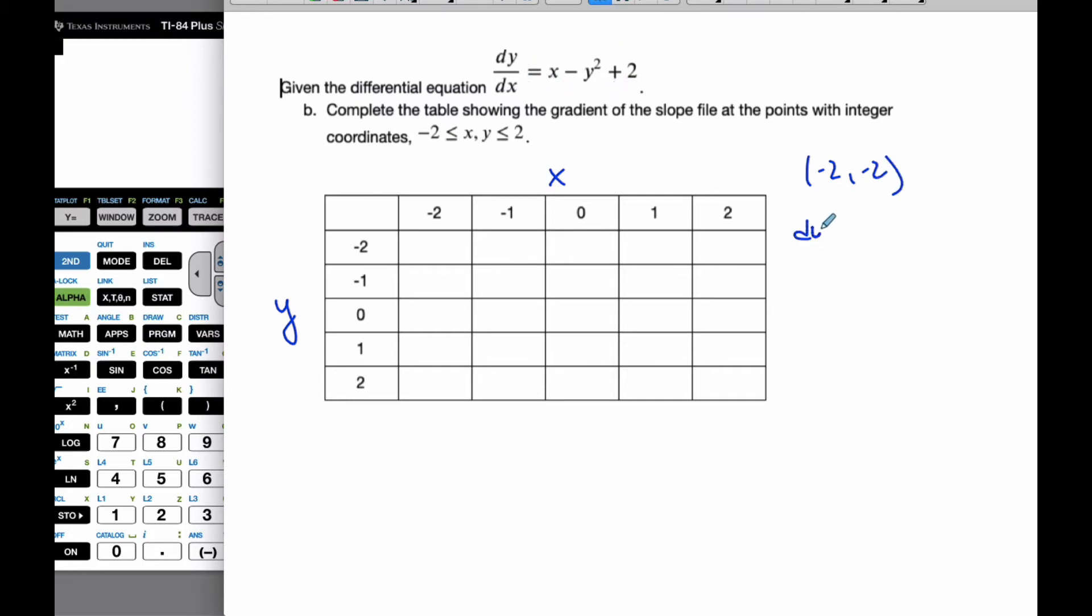And I plug it into my derivative. And that will give me the derivative at that point. So, the gradient, the slope of the gradient of that point. So I go negative 2 subtract negative 2 squared plus 2. Ends up giving me a negative 4. So this is negative 4.